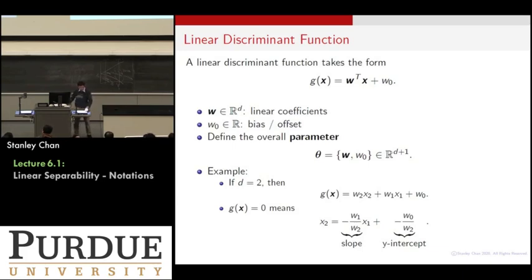OK, so now what are the w's? The w's, they are called the linear coefficients, the w0 is called a bias, or sometimes it's called an offset. And then we usually define the set of w and w0, which now is a d plus one dimensional vector. We call it the parameter of that model. So sometimes you may see I write a g_theta of x. Now this theta will refer to the concatenation of w and w0.